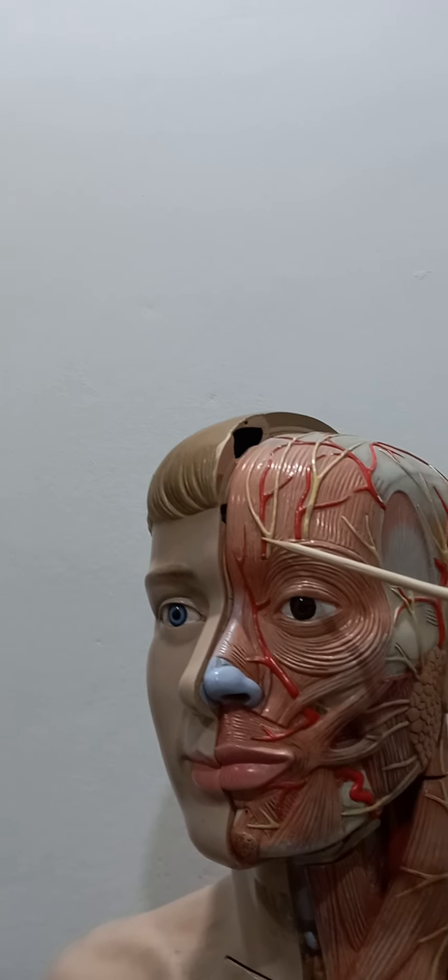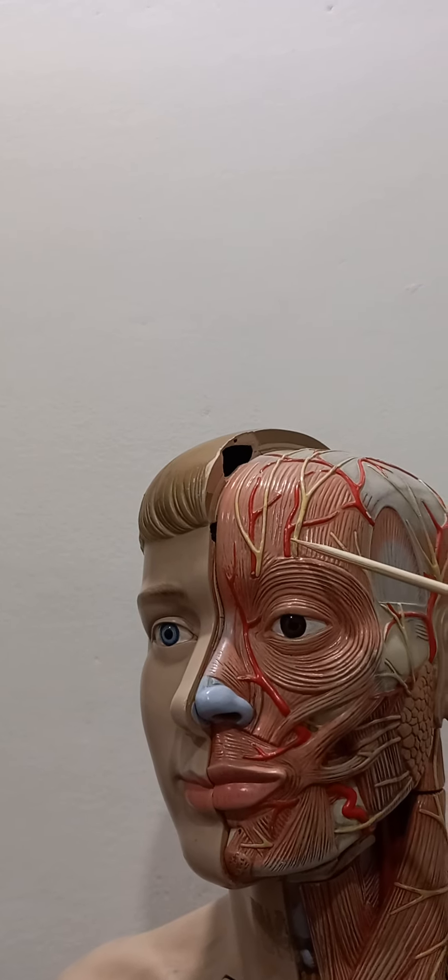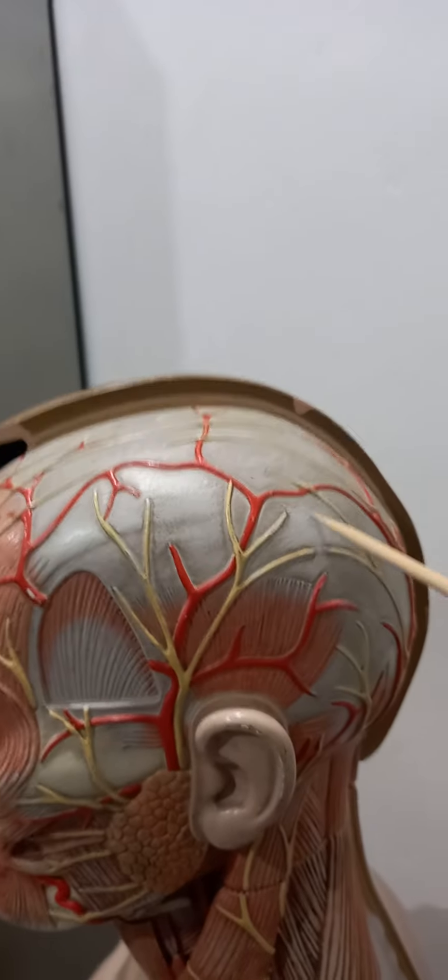And here you can see this nerve is the supratrochlear nerve and supratrochlear artery, supraorbital nerve and supraorbital artery. Then on the scalp here you can see this is epicranial aponeurosis.